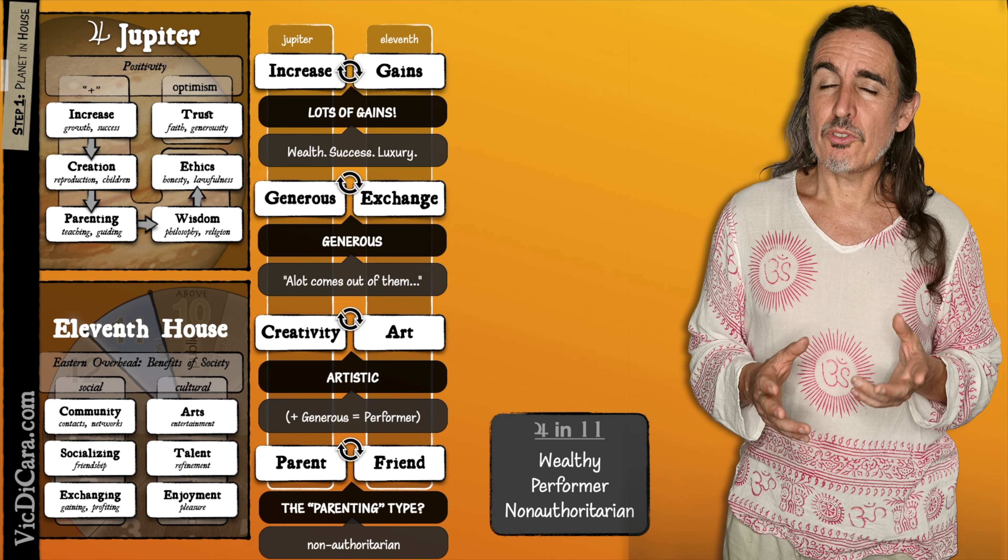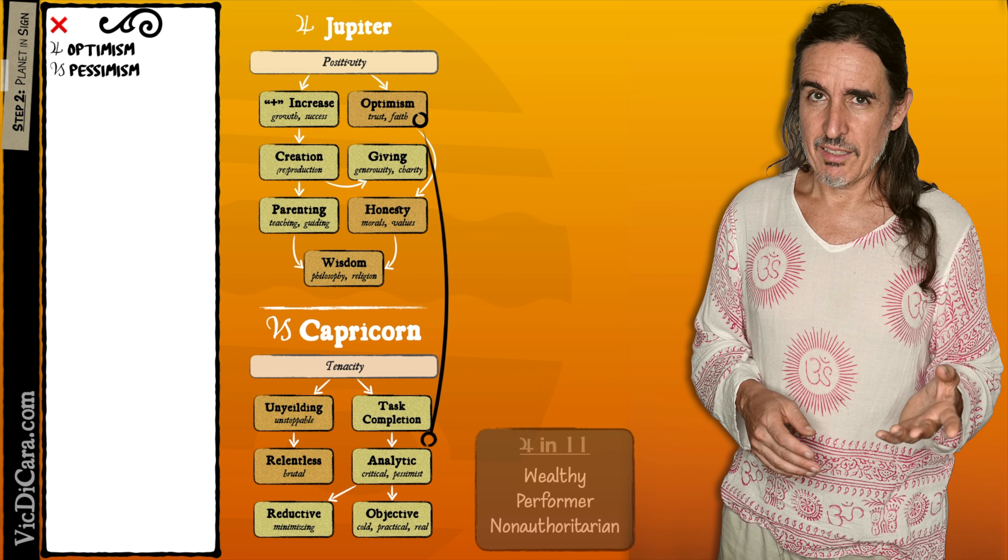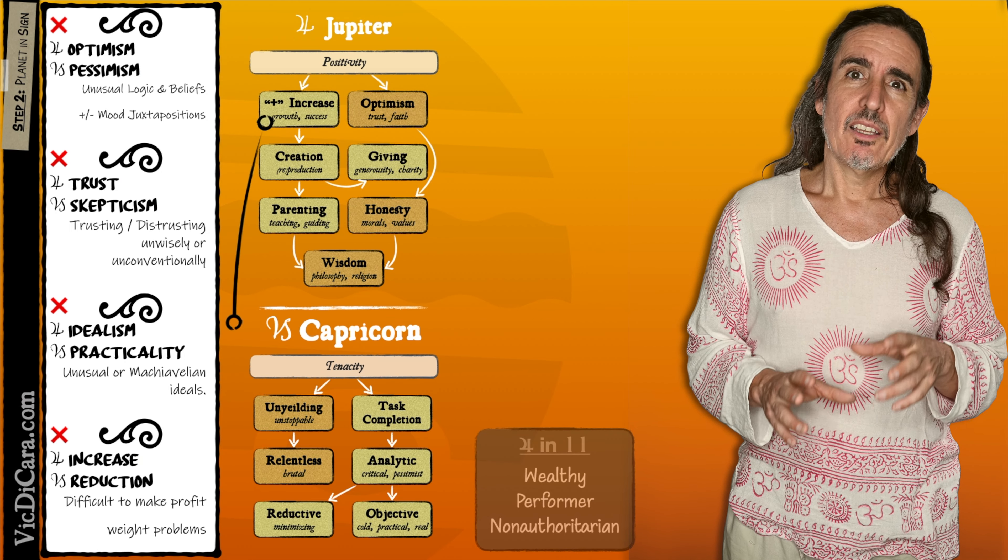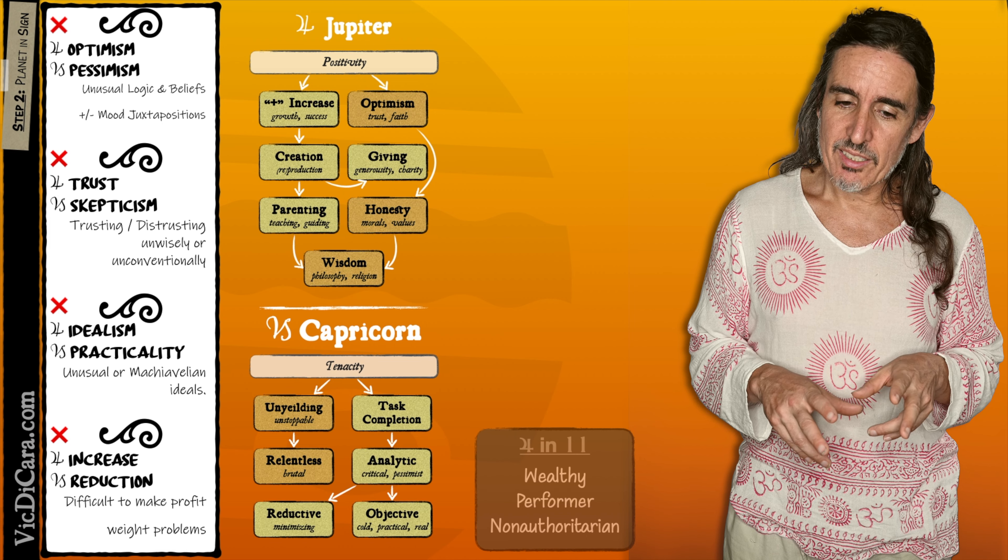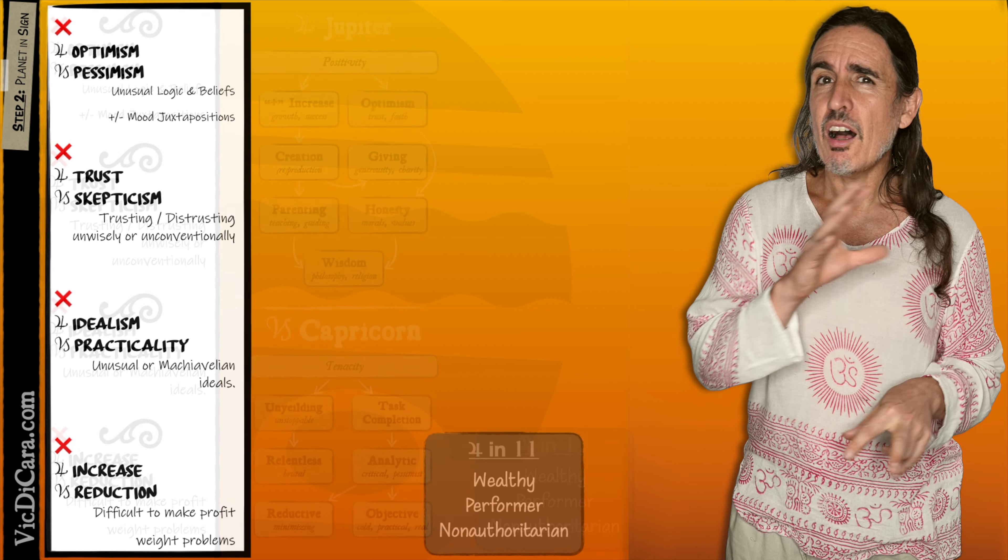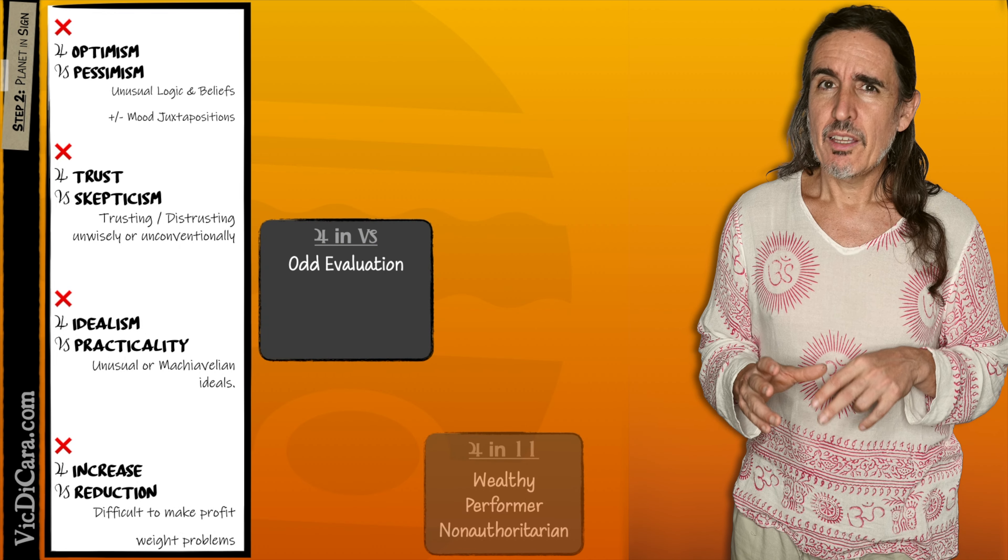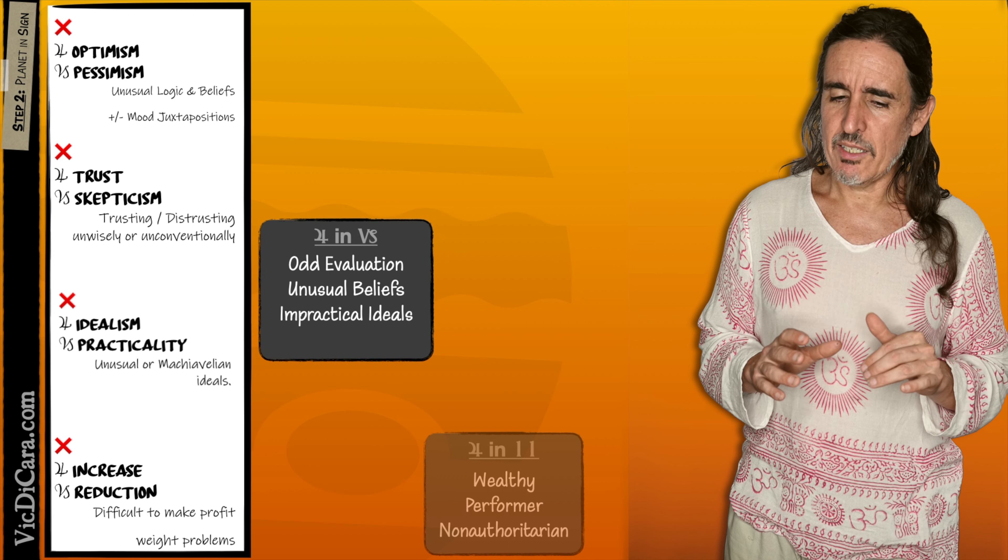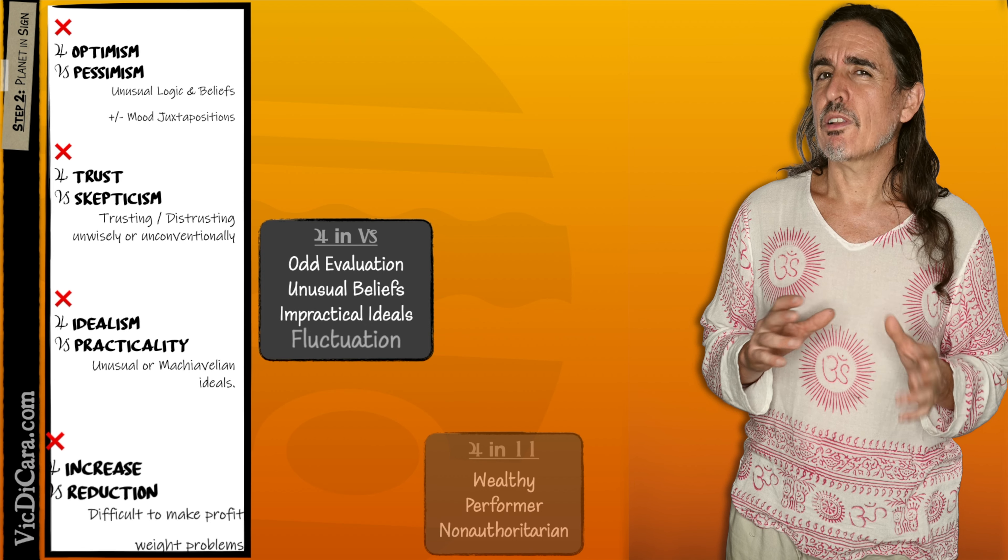The next thing to figure out is what Jupiter symbolizes when it's in Capricorn. Again, I have a whole video about exactly that, and I'll put a link to it in the description if you want to know the nuances. For now, the summary is that Jupiter in Capricorn symbolizes odd evaluation, unusual beliefs, impractical ideals, and fluctuations.